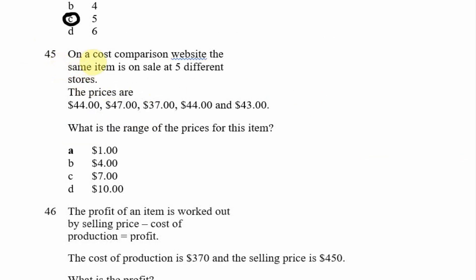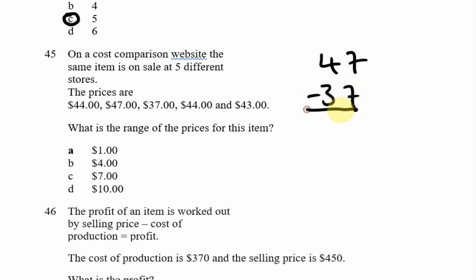Looking at question 45: on a cost comparison website, the same item is on sale at five different stores. The prices are 44, 47, 47, 37, 44, and 43. What is the range of the prices? The range is the difference between the most expensive and the cheapest price. The largest number is 47 and the smallest is 37. Subtracting: 47 minus 37 equals 10. So the range is 10 dollars.